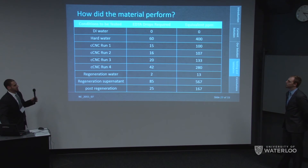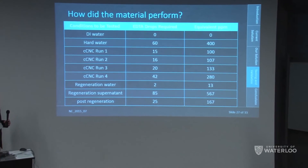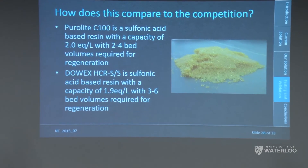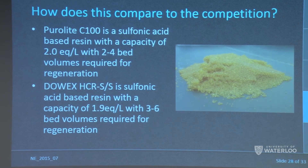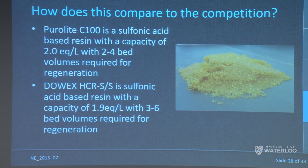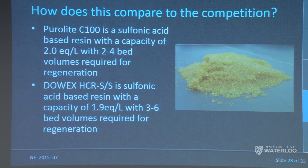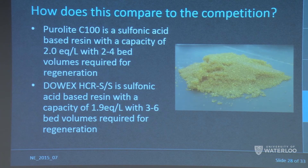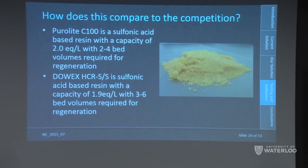Here are the numbers from the chart for easier analysis. How does this compare to the competition? The PureLite C100 and Dowex HCR both have capacities of approximately 1.9 to 2 equivalents per liter. Our material achieved approximately 9.0 equivalents per liter — roughly 4.5 times that of the competition, which is wonderful news.